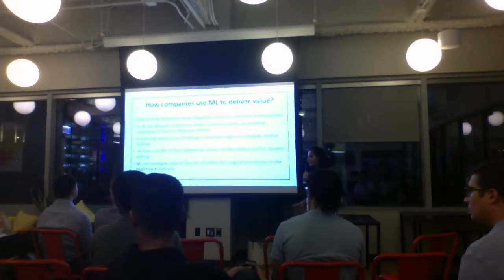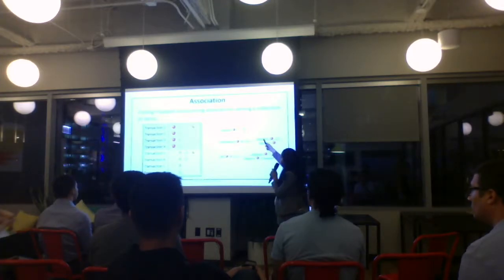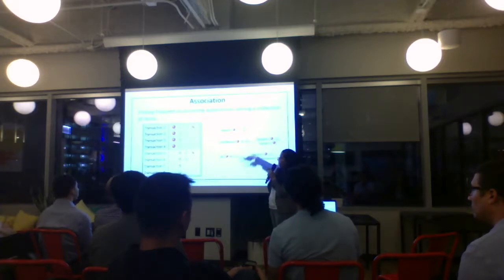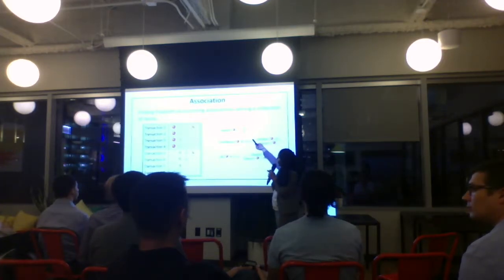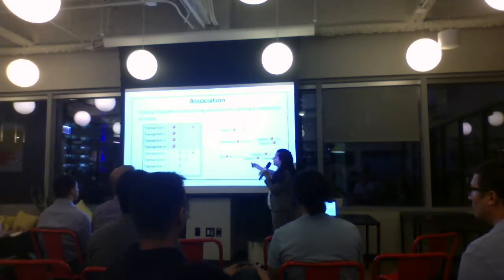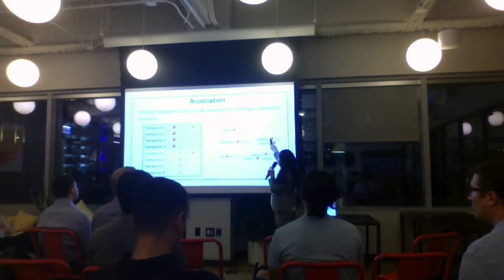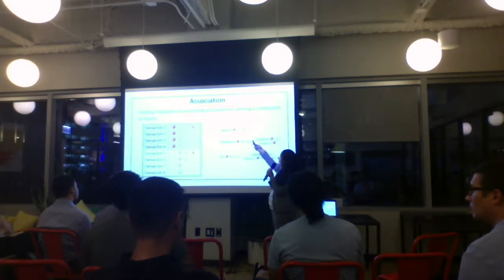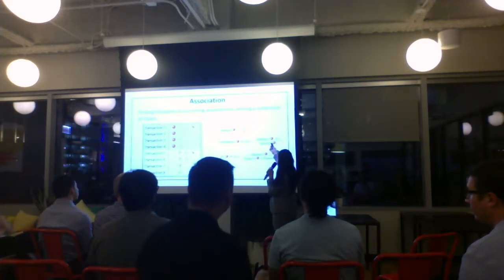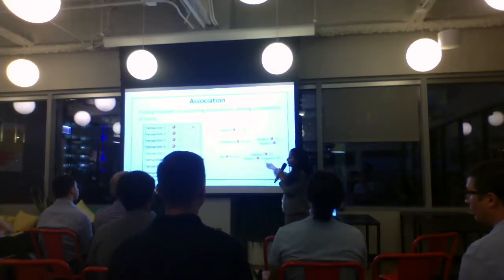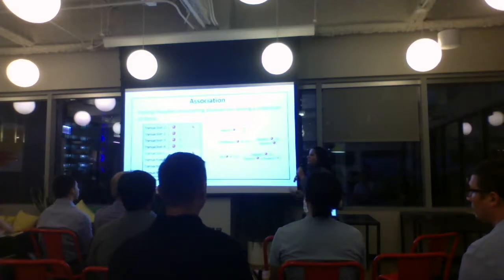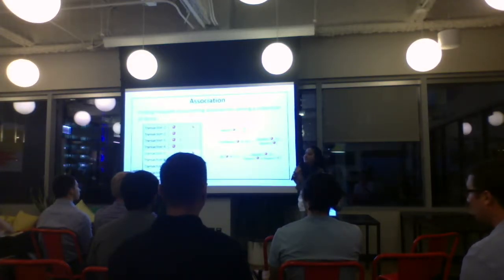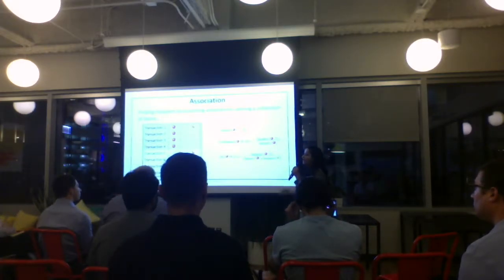Support is how many times a particular event occurs versus all transactions — for example, tomato occurs four times out of eight transactions, so support is four-eighths. Confidence says: of all instances where tomato occurs, how many times does beer also occur? It's the support of both items together divided by the support of tomato alone. Lift combines these to give the probability of how frequently they occur together, so you can strategize how to market or position your products. The classic example is market basket analysis.